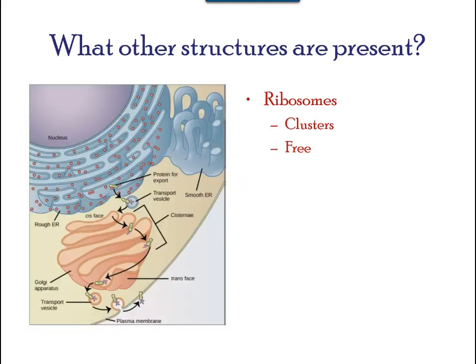Ribosomes are the cellular structures responsible for protein synthesis. When viewed through an electron microscope, free ribosomes appear as either clusters or single tiny dots floating in the cytoplasm. They may also be attached to either the cytoplasmic side of the plasma membrane or the cytoplasmic side of the endoplasmic reticulum.